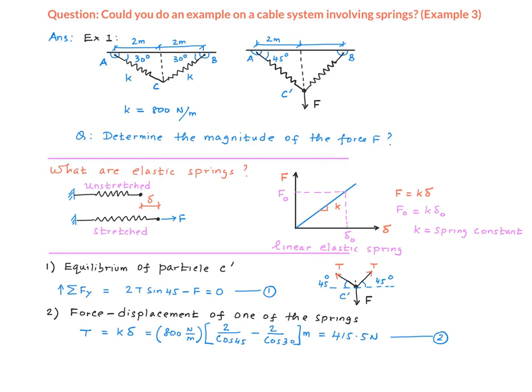The two unknowns are the tension in the spring T and the applied force F. We take this and substitute into equation number one to evaluate the force F, which is the question. The magnitude of the force is calculated to be 587.6 Newtons.